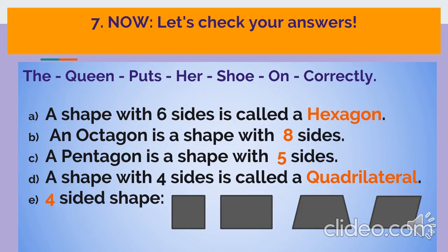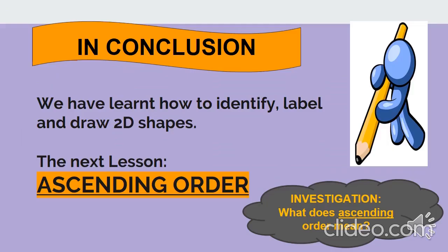Get yourself a mark out of five. In this lesson, we have learned how to identify, label and draw 2D shapes. Your next lesson is going to be on ascending order. What does ascending order mean? You've got some homework.